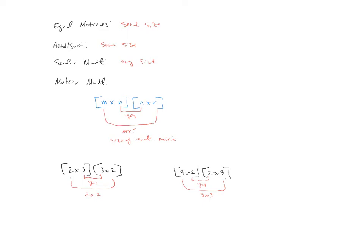There's a surprisingly big takeaway from this example. We were able to interchange the order and while we were still able to multiply, the size of the resulting matrix was different. This shows that matrix multiplication is not commutative. With real numbers, five times three and three times five both give the same result — that's commutativity. Here, while we're able to perform the operation, we don't get the same thing, so matrix multiplication is not commutative.